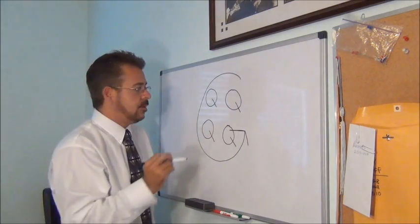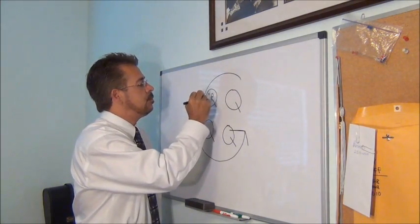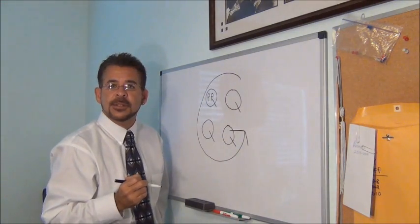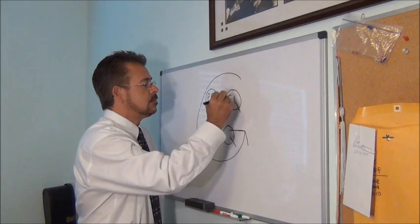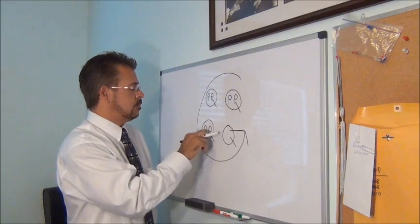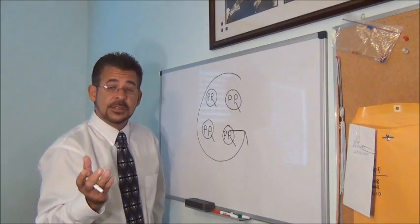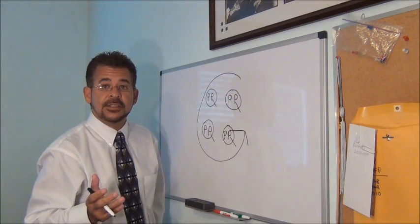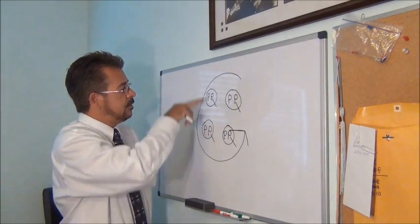Now inside those quarts you're going to put two Ps which stand for pints. So there are two pints in every quart. So if I was to ask, how many pints are there in half a gallon? Do the half. There are four pints.